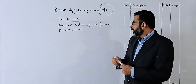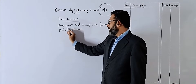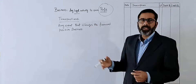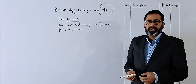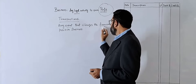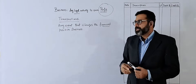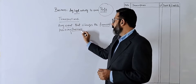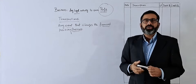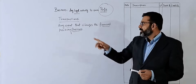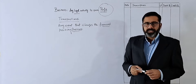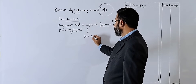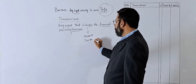There are two things here: first, the event; and second, that event is changing — meaning it may be an increase or it may be a decrease — the financial position of the business. It means anything related to the business that is changing its financial position will be considered as a transaction. A change may be an increase or a decrease.